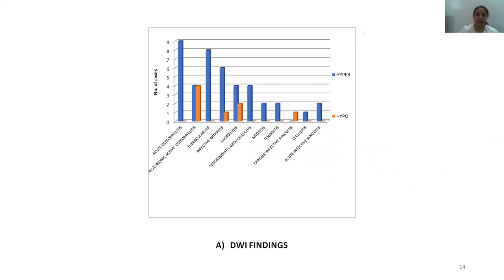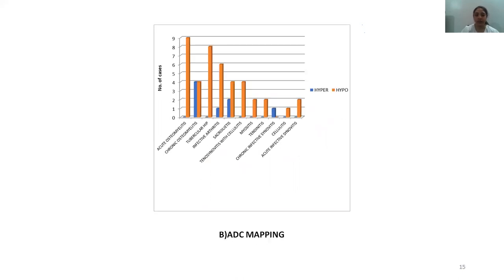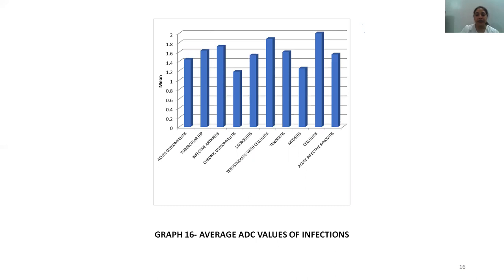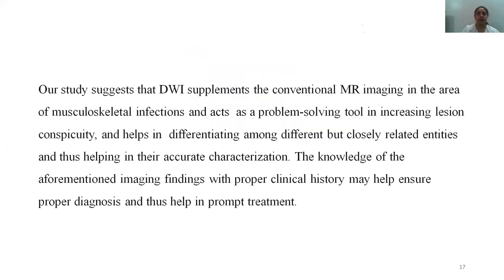The DWI findings showing hyperintensity included most cases of acute osteomyelitis, tubercular hip arthritis, septic arthritis, tenosynovitis with cellulitis, and myositis — all infectious conditions appearing hyperintense on DWI with corresponding hypointense ADC mapping. Our study suggested that DWI supplements conventional MR imaging in musculoskeletal infections, acting as a problem-solving tool in increasing lesion conspicuity and helping differentiate among different but closely related entities, aiding in their accurate characterization. Knowledge of these imaging findings combined with proper clinical history may help ensure proper diagnosis and thus correct treatment. Thank you.